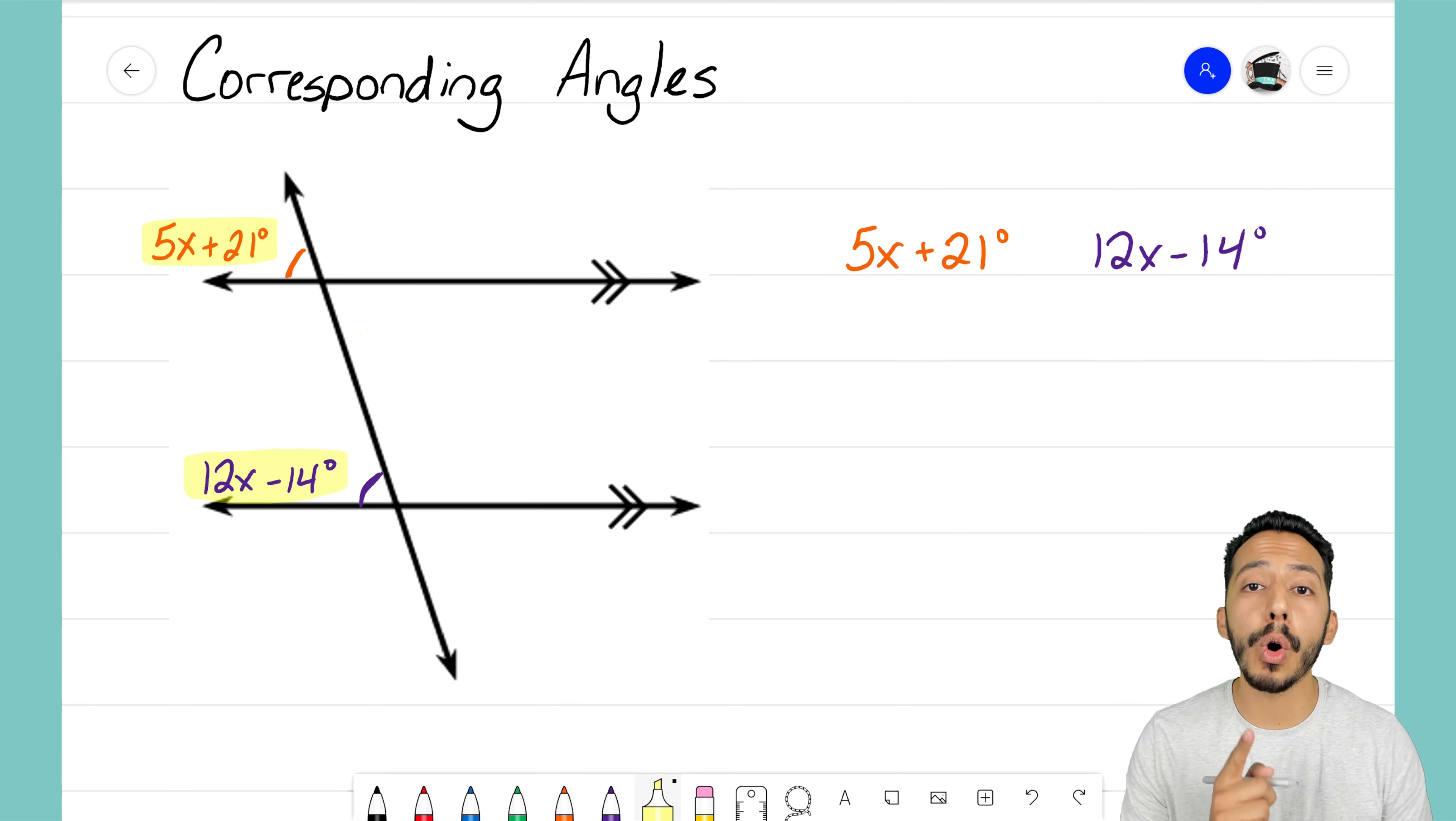They are equal because we call them corresponding angles, and corresponding angles are two angles that are in the same position, but just different locations. They are equal. So because of the fact that they're equal, I'm going to add a little equal sign here, and now I have an equation where I can solve for my missing variable x.